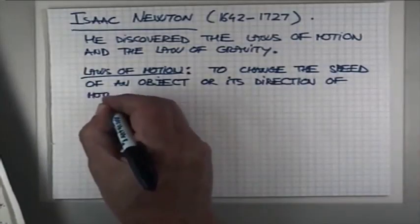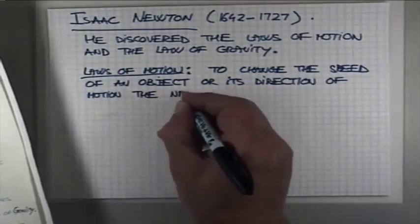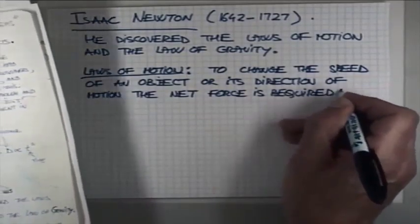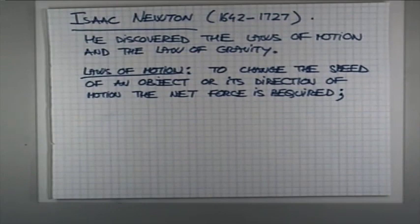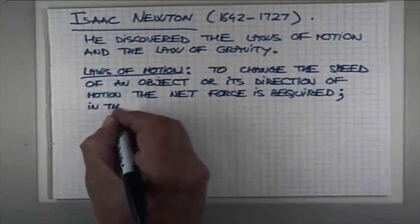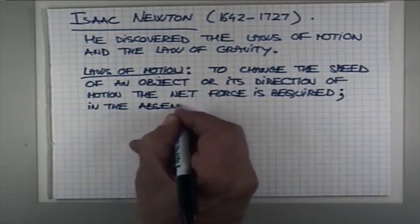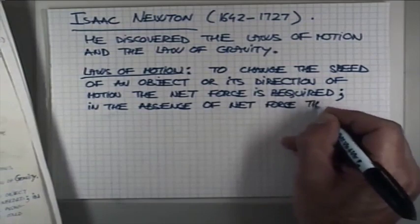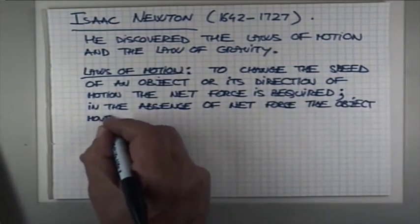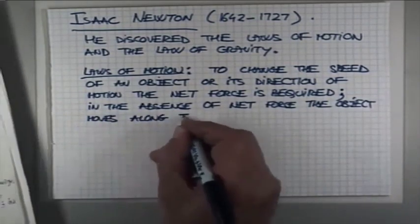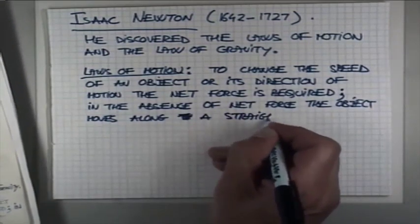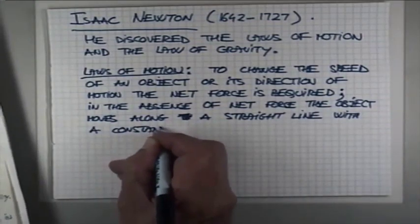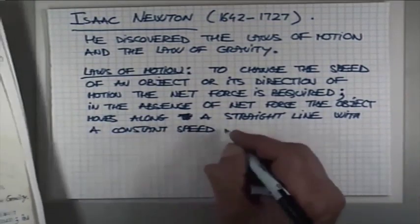So if you are to change the speed of an object, either accelerate or decelerate it, you need to exert a force on it. Also, if you want to change the direction of motion, you need to exert a force on it. In the absence of net force, the object moves along a straight line with a constant speed, which could be zero.